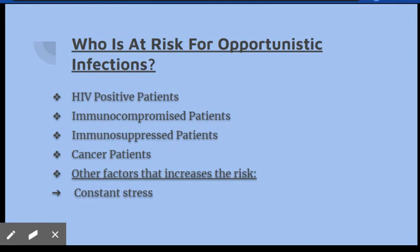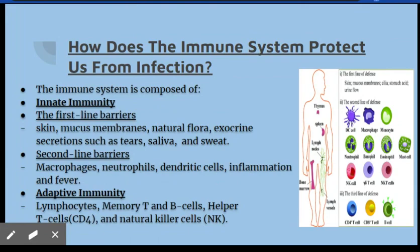The immune system has a variety of ways of protecting the body from infection and is composed of the innate immunity, which is the more general type of immunity. It is composed of first-line barriers such as the skin and mucous membranes, and second-line barriers composed of cells that can phagocytize bacteria, including the fever and inflammation response.